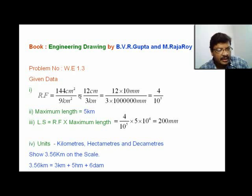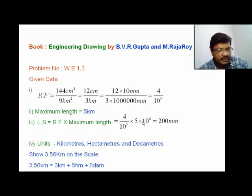After calculating RF, read the problem carefully and extract the maximum length. The maximum length given in the problem is 5 km. Now calculate the length of the scale: LS = RF × maximum length. RF is 4 / 10⁵, and the maximum length is 5 km. Convert 5 km to mm — that is 5 × 10⁶ mm — and you get the length of the scale as 200 mm.